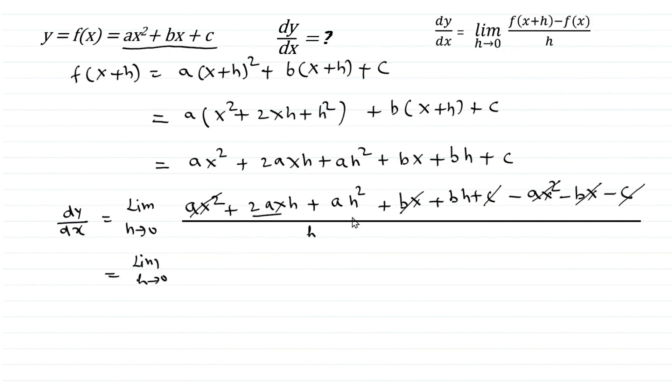Now only three terms remain: 2axh plus ah² plus bh, all divided by h.